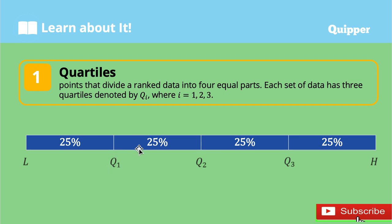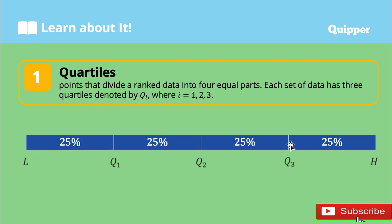This illustration shows the position of the three quartiles in a ranked data. L is the lowest value and H is the highest value, so the data is already in ascending order. Each part has 25%, dividing the ranked data into four equal parts with a total of 100%. We have Q1, Q2, and Q3 as the three dividing points.